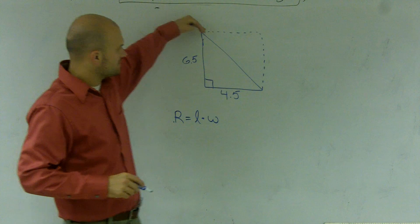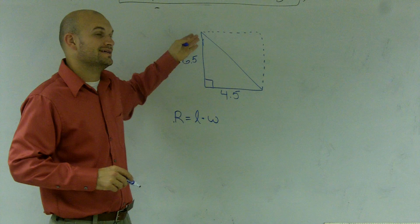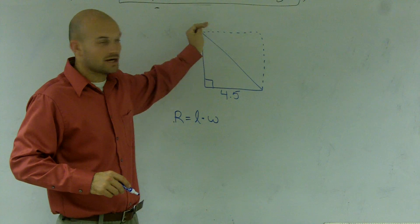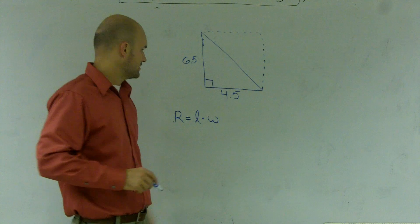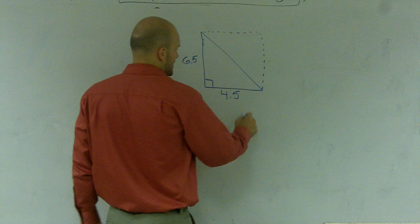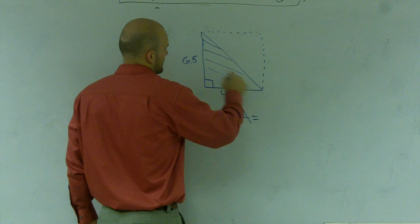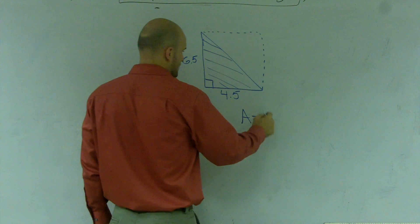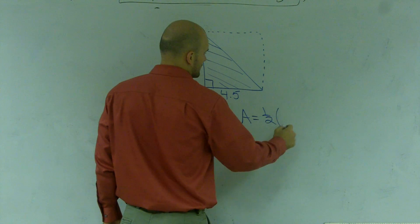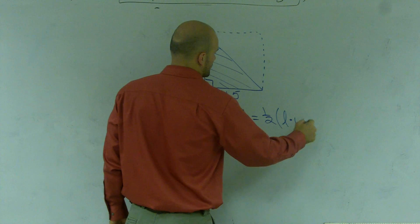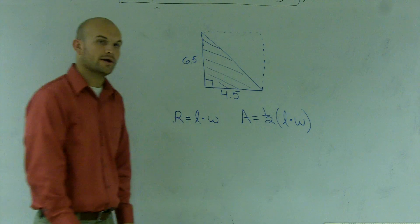Well, if you look at this triangle, this triangle is exactly half of the area of this rectangle that I created. So if I want to find the area of a triangle, which is this area here, I'm going to say one-half length times width.